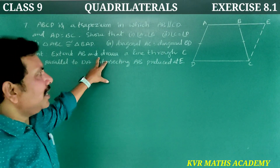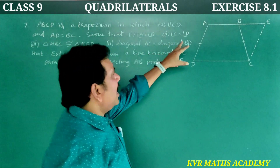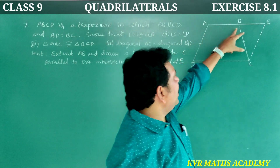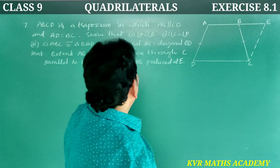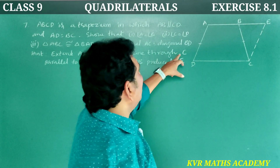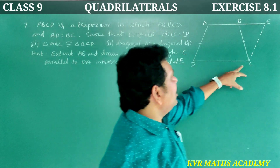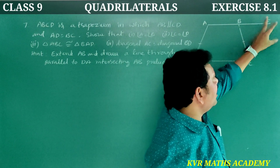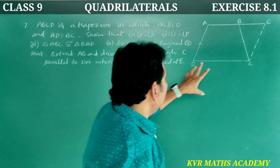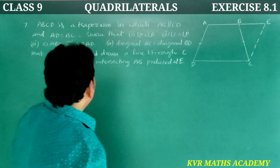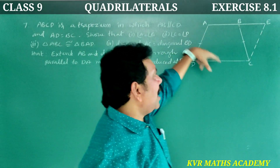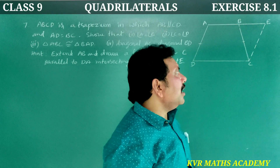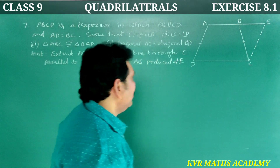Hint: Extend AB to E. Draw a line through C parallel to DA, intersecting AB produced at E.